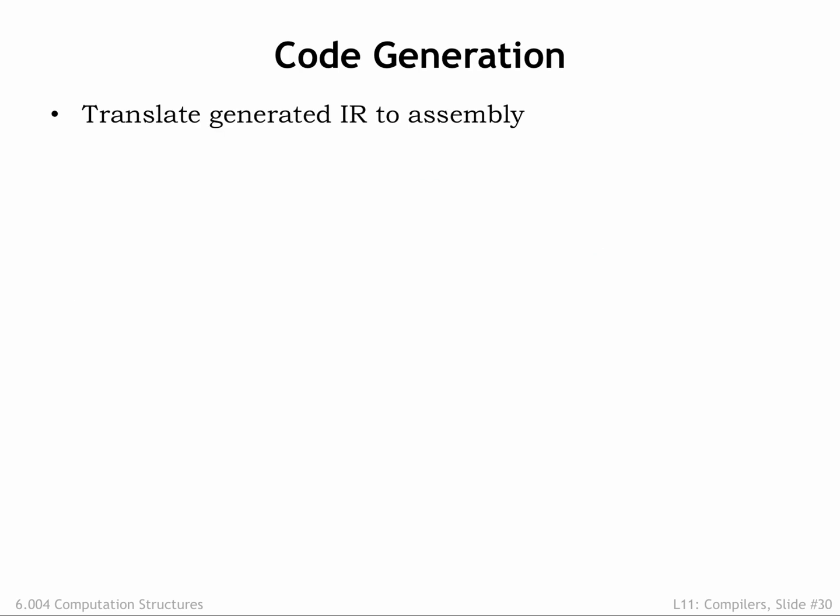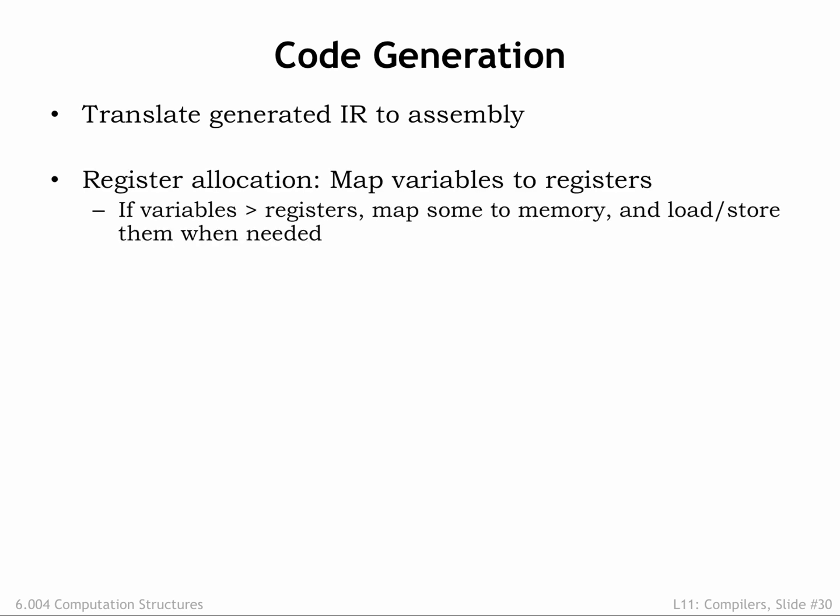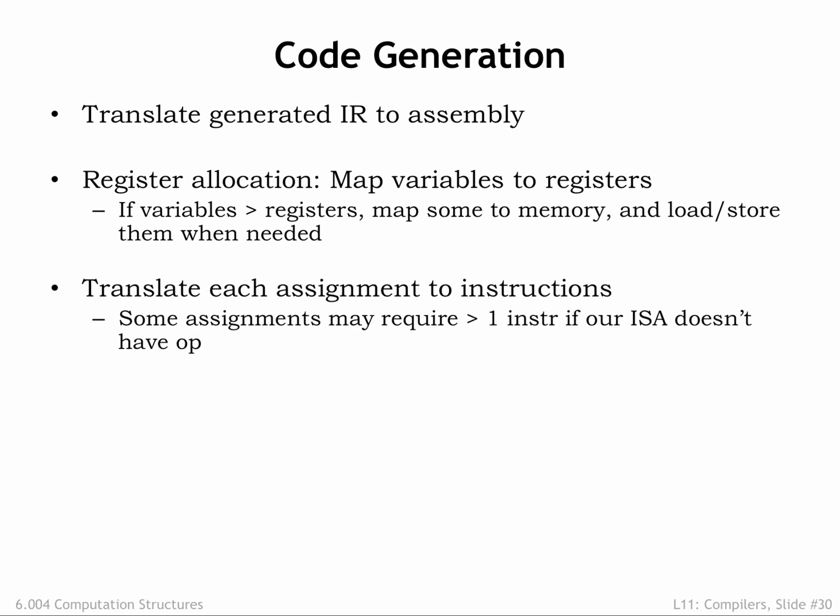OK, we're done with optimizations. Now it's time to generate instructions for the target ISA. First, the code generator assigns each variable a dedicated register. If we have more variables than registers, some variables are stored in memory and will use load and store to access them as needed. But frequently used variables will almost certainly live as much as possible in registers. Use our templates from before to translate each assignment and operation into one or more instructions.